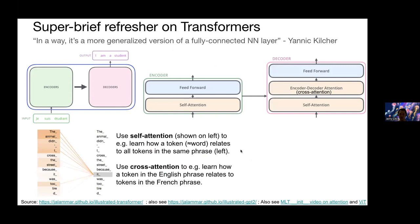Another basic building block for these models is transformers. One way to think about it is as a more generalized version of a fully connected neural network layer. Transformers have encoders and decoders and use a mechanism called attention. Self-attention is basically learning how a word token in a sentence relates to other word tokens in the same sentence. Cross-attention could allow you to learn, for each word token in an English phrase, how each relates to each token in the French phrase. There are really great resources in the links below, especially two links from previous ML Tokyo presentations.